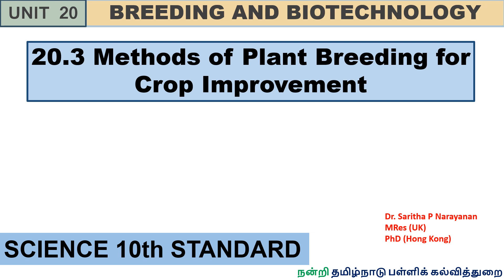Hello students, welcome to ASAN YouTube channel. Today we are going to study methods of plant breeding for crop improvement from Unit 20, 10th Standard Science.